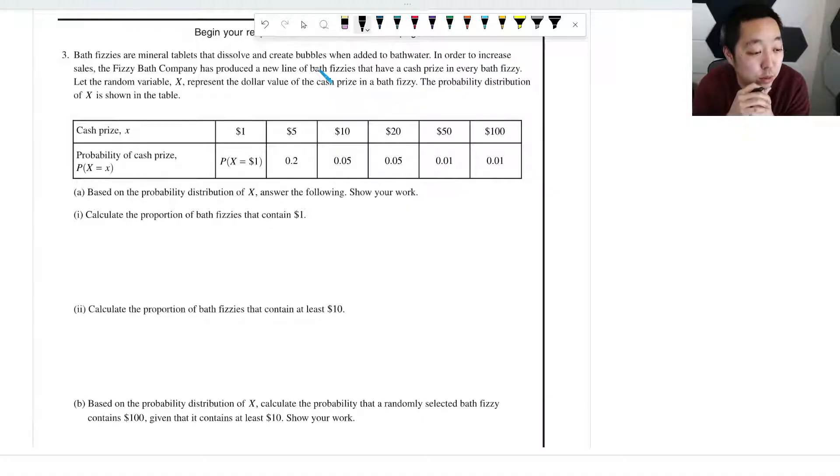So bath fizzies are mineral tablets that dissolve and create bubbles when added to bath water. In order to increase sales, the Fizzy Bath Company produces a new line of bath fizzies that have a cash prize in every bath fizzy. Let random variable x represent the dollar value of the cash prize in a bath fizzy. The probability distribution of x is shown in the table. Based on the probability, answer the following and show your work. Calculate the proportion of bath fizzies that contain $1.